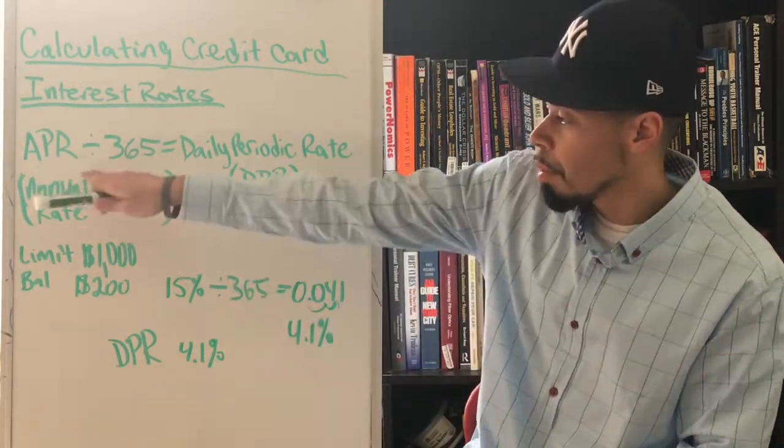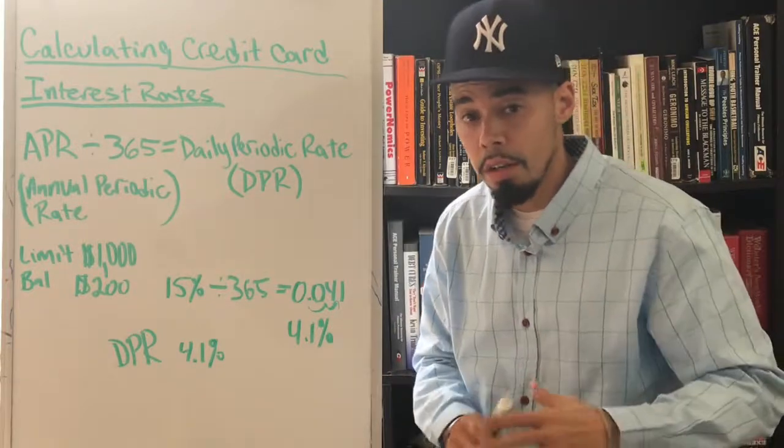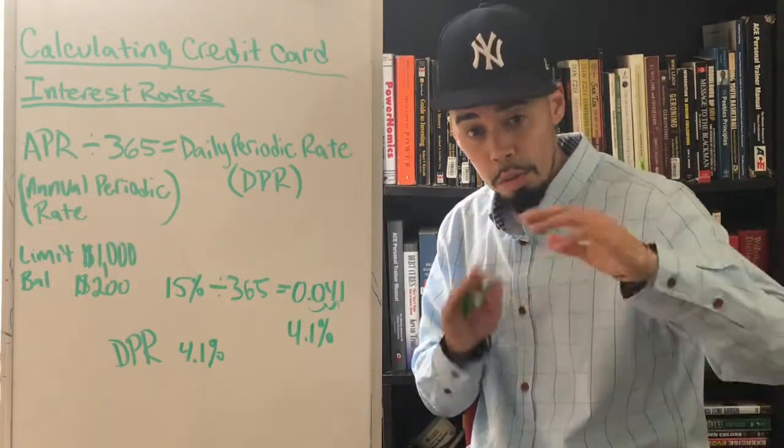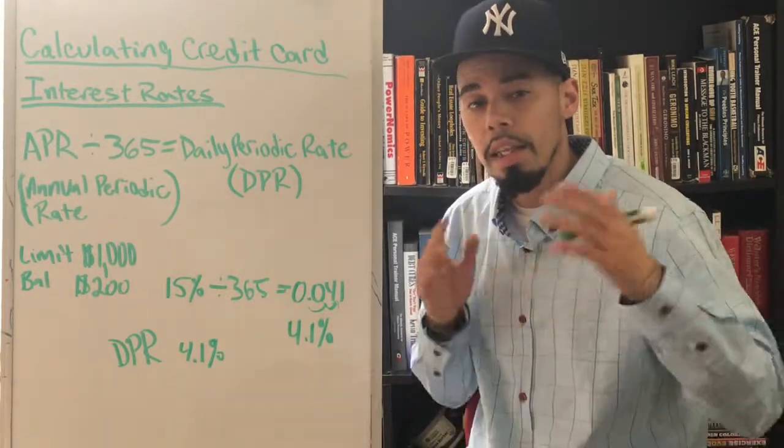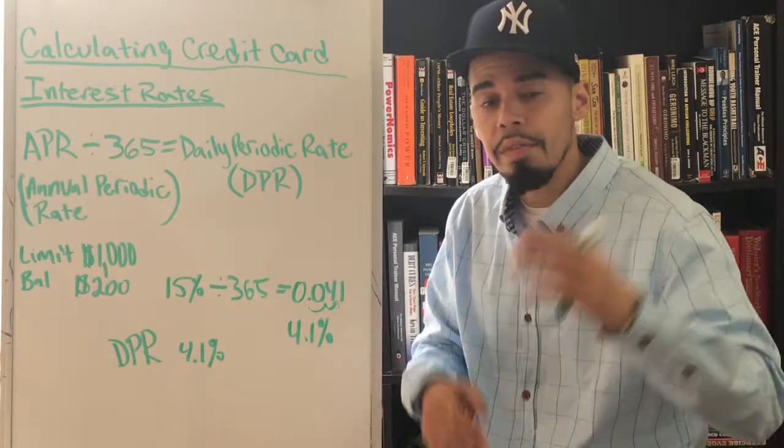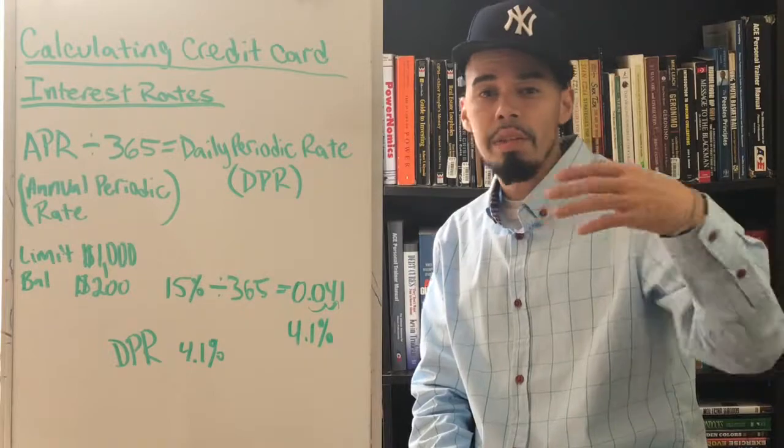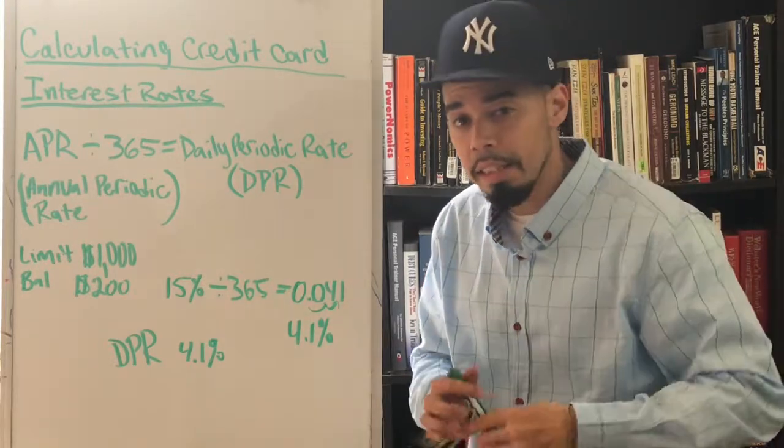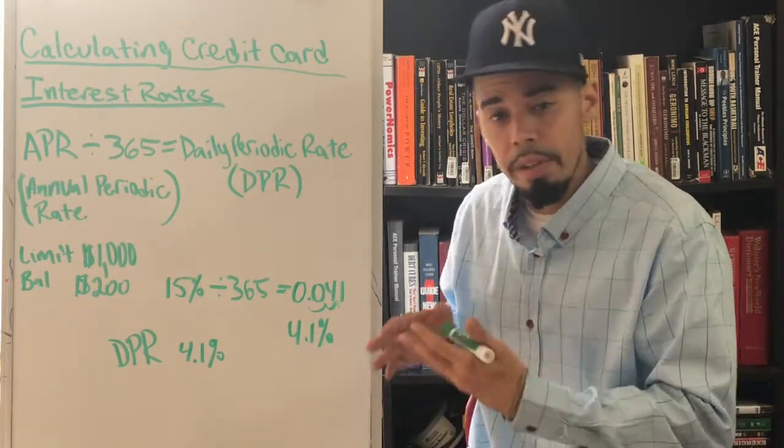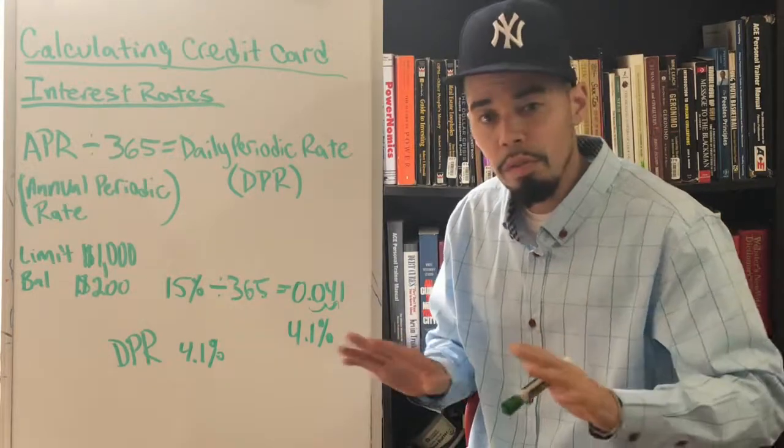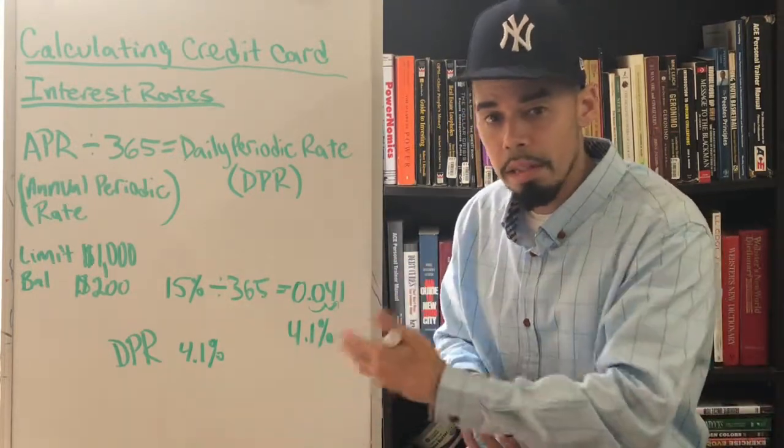This is the formula right here when you calculate credit card interest. For those of you who don't know what that is, the APR - the APR and DPR. The APR is the annual percentage rate or annual periodic rate. The DPR is the daily periodic rate. Two different functions.